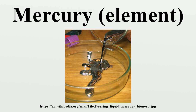History: Mercury was found in Egyptian tombs that date from 1500 BC. In China and Tibet, mercury use was thought to prolong life, heal fractures, and maintain generally good health, although it is now known that exposure to mercury vapor leads to serious adverse health effects. The first emperor of China, Qin Shi Huang, was allegedly buried in a tomb containing rivers of flowing mercury on a model of the land, representative of the rivers of China, and was killed by drinking a mercury and powdered jade mixture formulated by Qin alchemists who intended to give him eternal life.